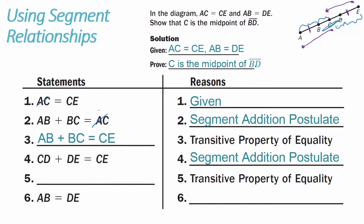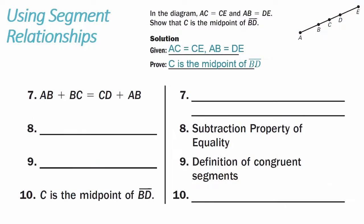From steps three and four, CE is written twice, so using the transitive property of equality, we can say AB plus BC equals CD plus DE. Then in step six, AB equals DE — that's our given. Since DE is common to both steps five and six, using the substitution property of equality, we get AB plus BC equals CD plus AB.